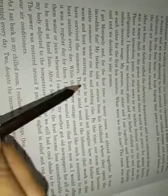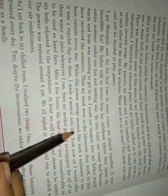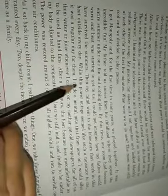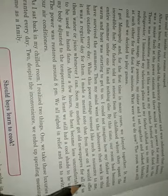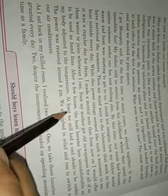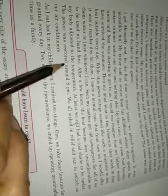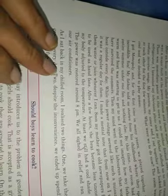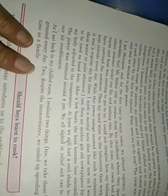By this time our room had become warm and the heat was starting to get to us. I could not imagine how my father would have survived the summers. Then my mind went to the laborers who work in the heat outside every day. While this power outage seemed like just a nuisance to me, it was a regular day for them. I made a mental note to offer them water or juice whenever I can. Soon my mother got old newspapers for all of us to use as hand fans. After a few hours the heat became less uncomfortable as my body adjusted. The power was restored around 8pm. We all sighed in relief and ran to switch on our air conditioners. As I sat back in my chilled room I realized two things: one, we take these luxuries for granted every day; and two, despite the inconvenience, we ended up spending meaningful time as a family.